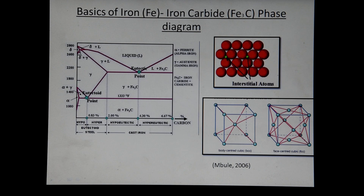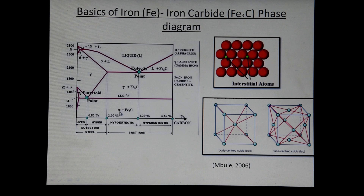The delta region is also ferrite and also body-centered cubic. On this side we also have the liquid region, the alpha plus liquid region, the liquid plus cementite region, austenite plus cementite, and ferrite plus cementite.